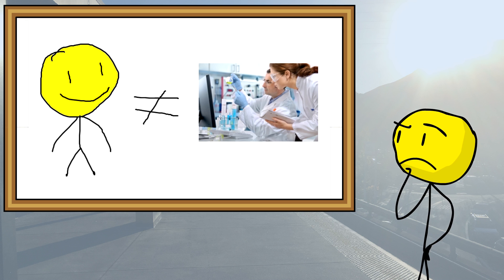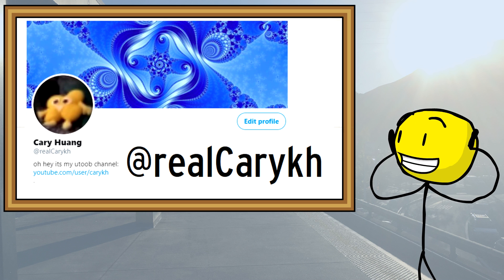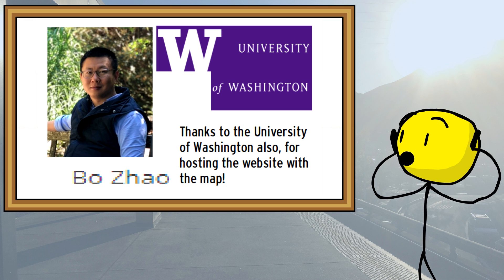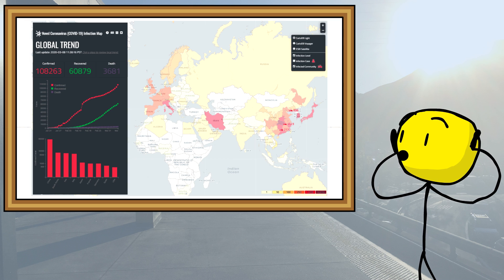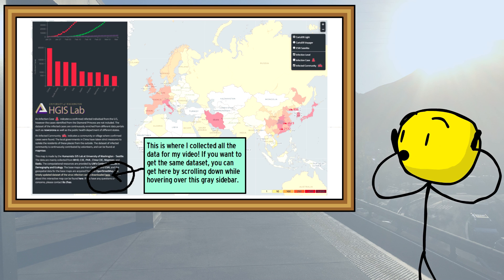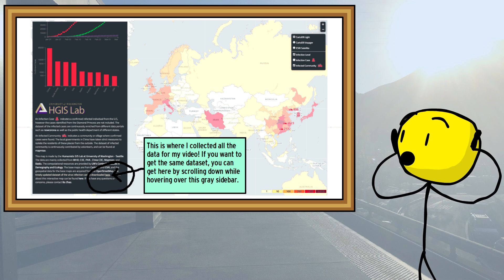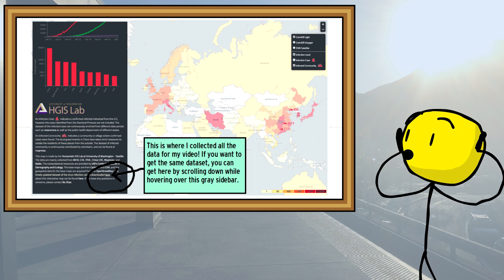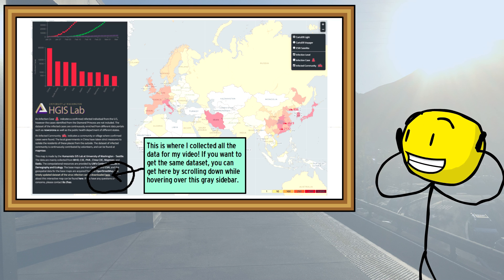But if any of you viewers are epidemiologists, message me on Twitter, and you can help make my next video more accurate. I also want to say thanks to Bo Zhao for producing this interactive map of coronavirus' spread. The CSV file linked at the bottom is the easiest and most comprehensive dataset I've found so far, and it's a big reason why this video can exist.